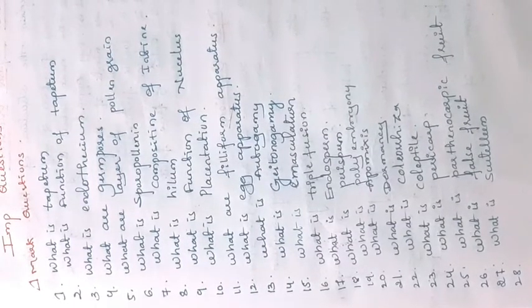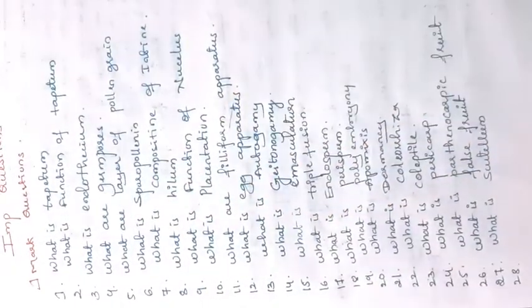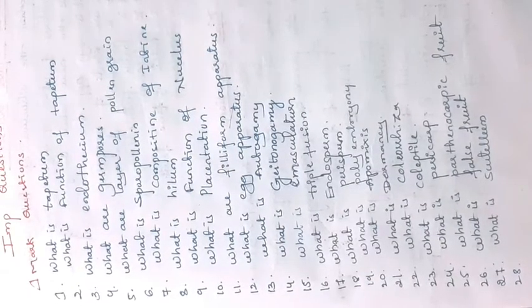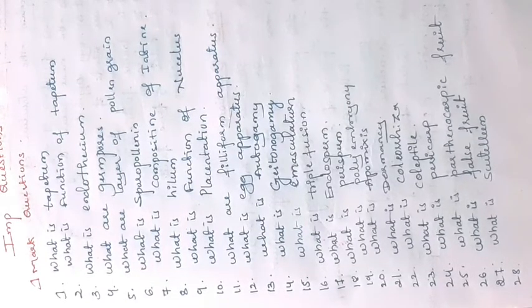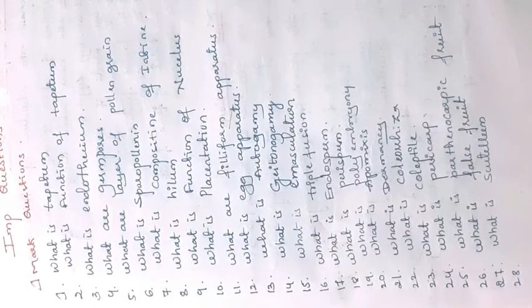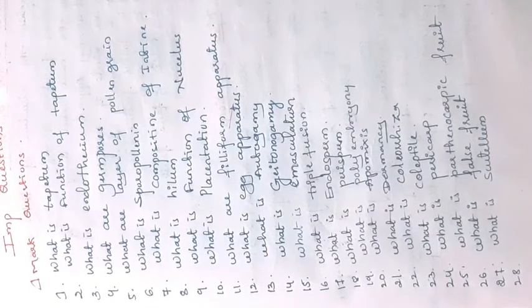Microspores and pollen grains are both the same. Next, what is endothecium? Endothecium is the second layer of the anther — after the epidermis, the next layer is the endothecium. It helps in the dehiscence of the anther after maturity.